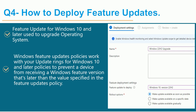Question four: how to deploy feature updates. Feature updates for Windows 10 and later are used for upgrading the operating system. Windows feature update policies work with your update ring policies to prevent a device from receiving a Windows feature version later than the value specified in the feature update policy. When you select a version — for example 22H2 — that OS will be made available to upgrade on the target device, with options for as soon as possible, a specified date, or gradually.